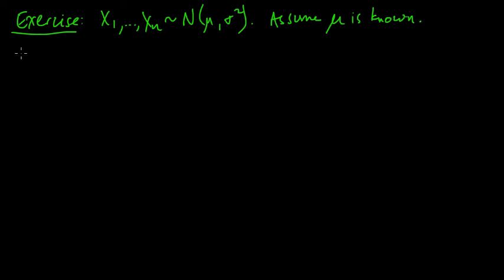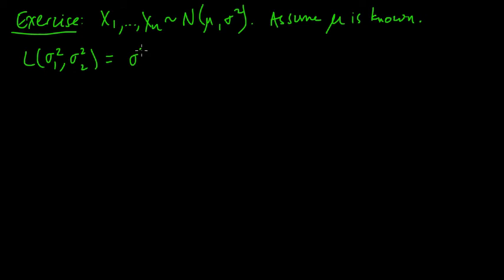Let's take the loss function to be the squared loss. So L of sigma squared₁, sigma squared₂ is just the square of the difference — just the squared loss.